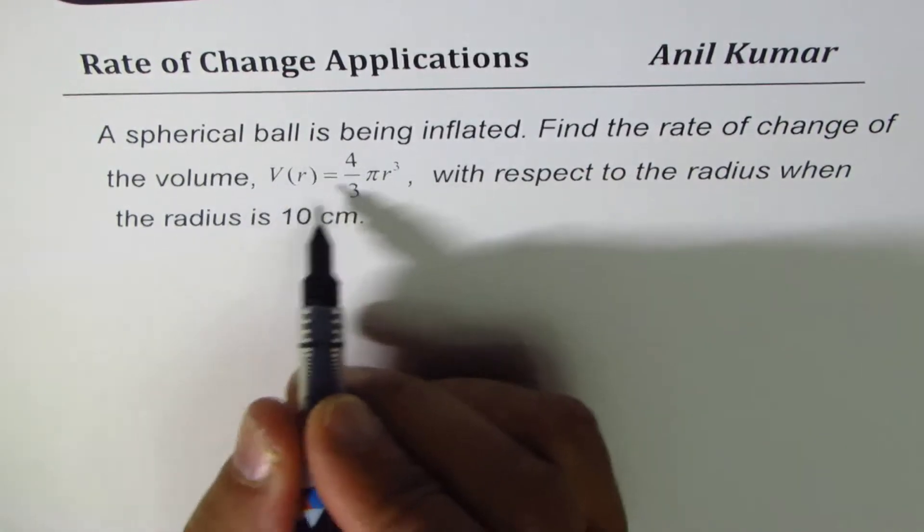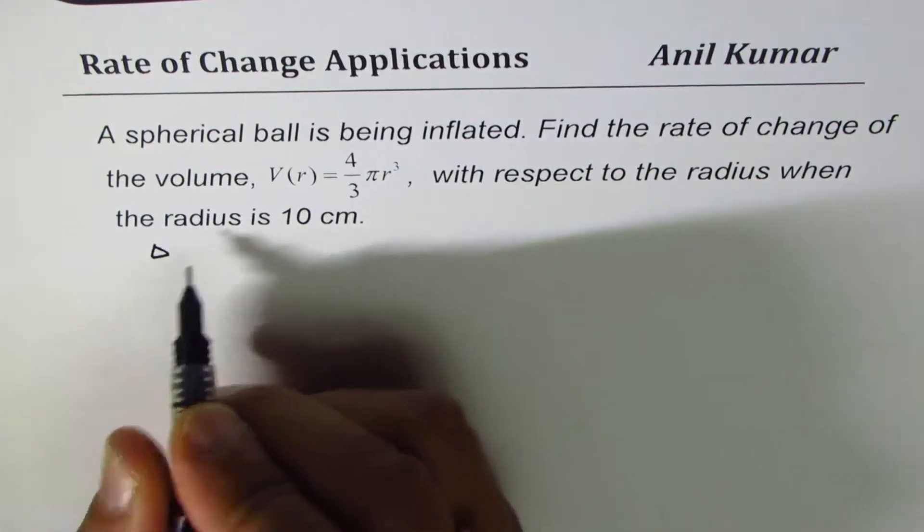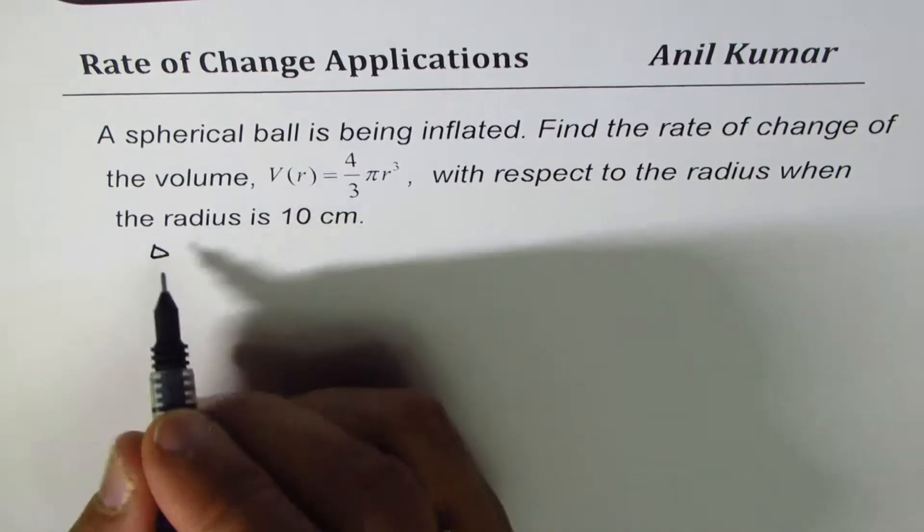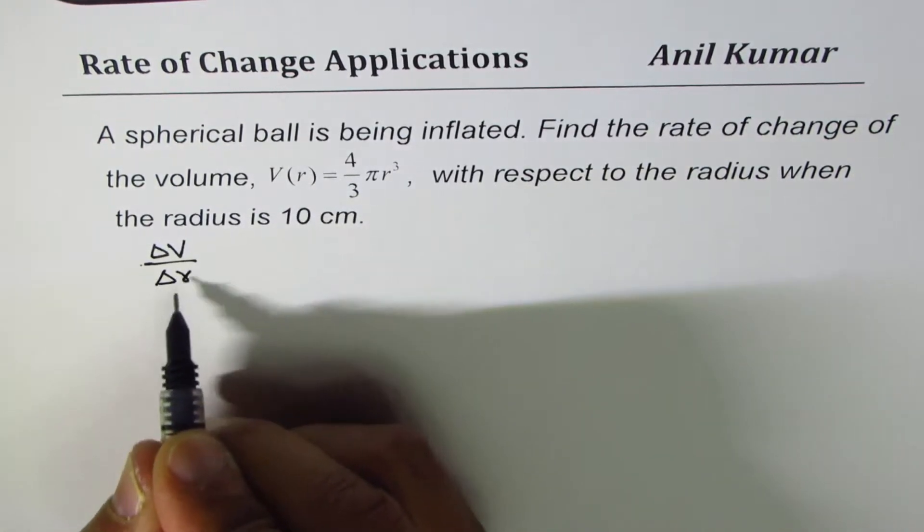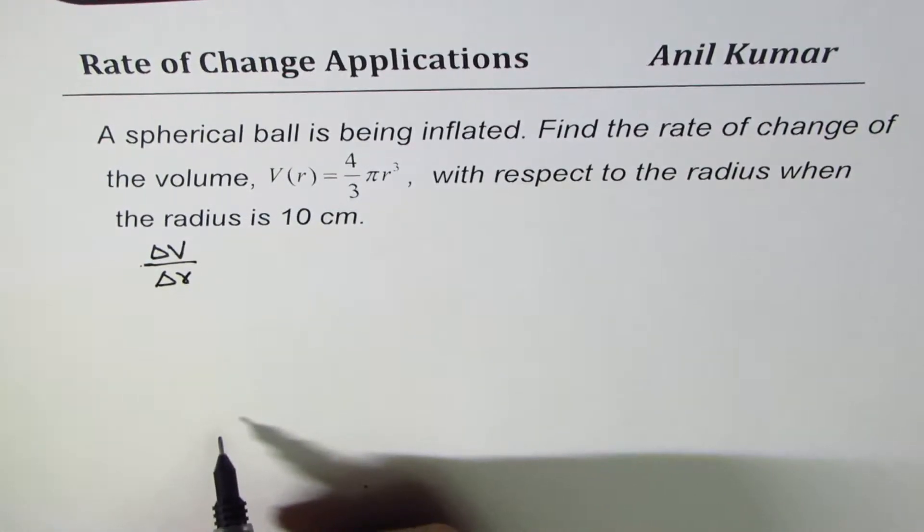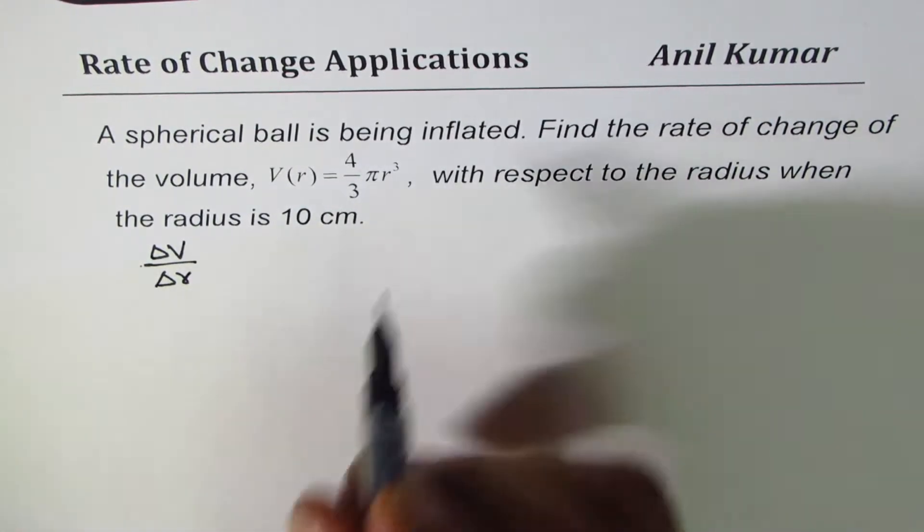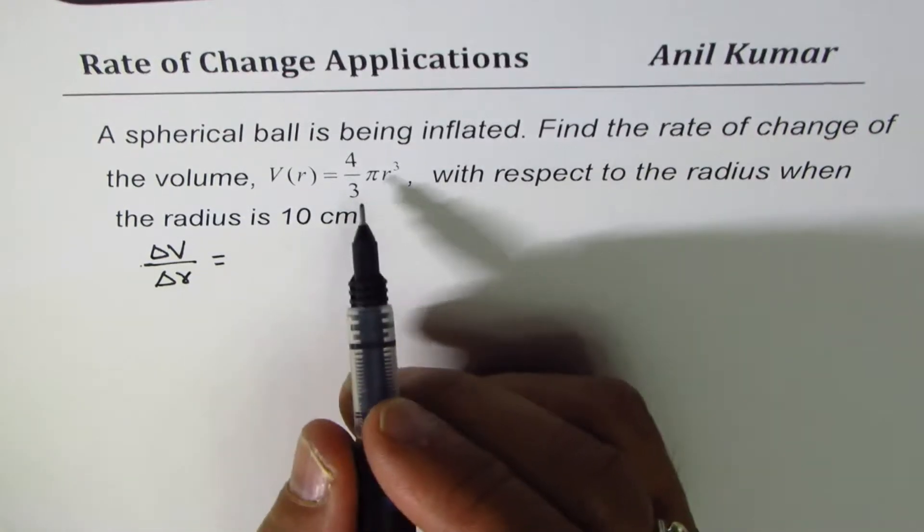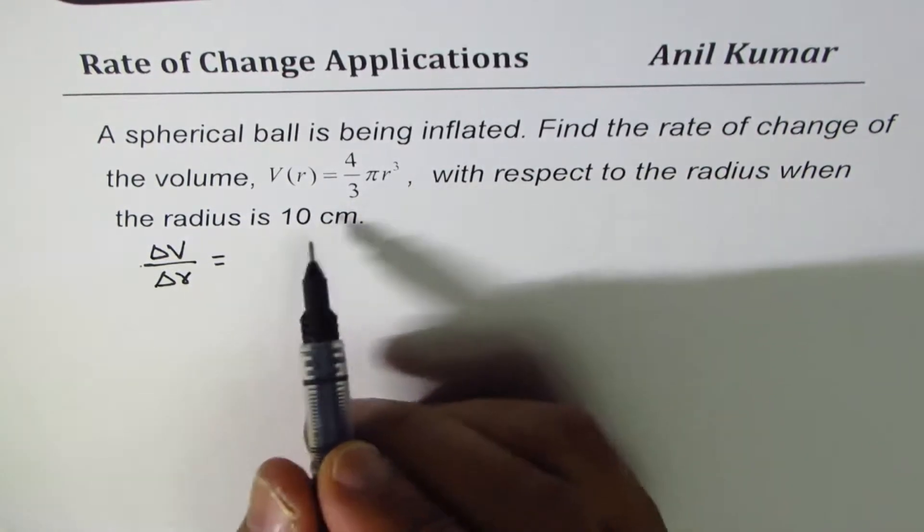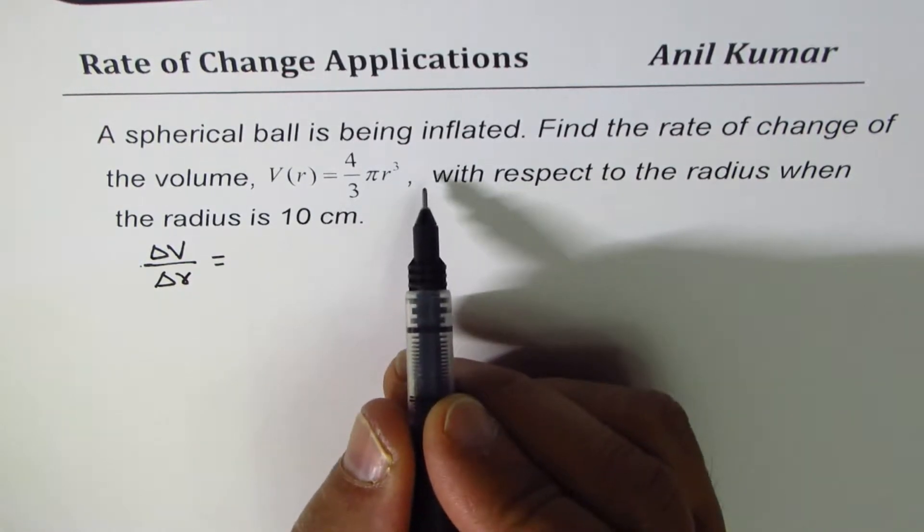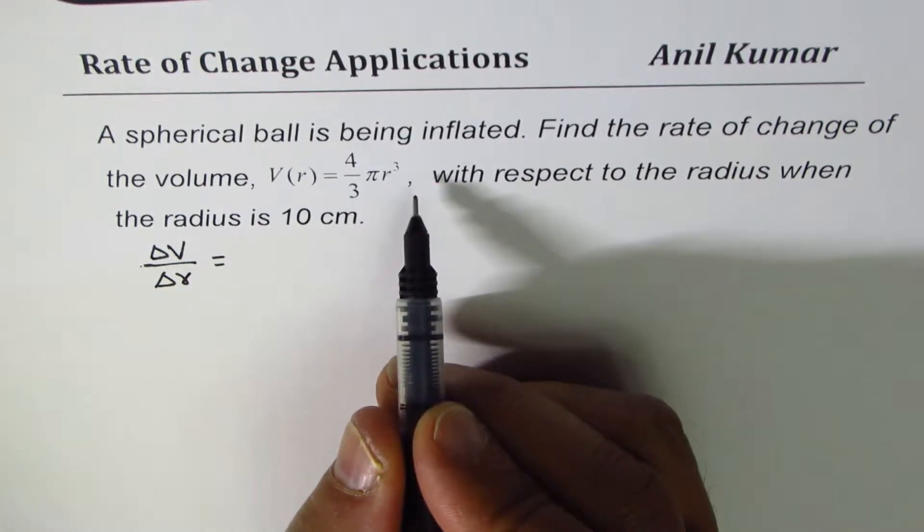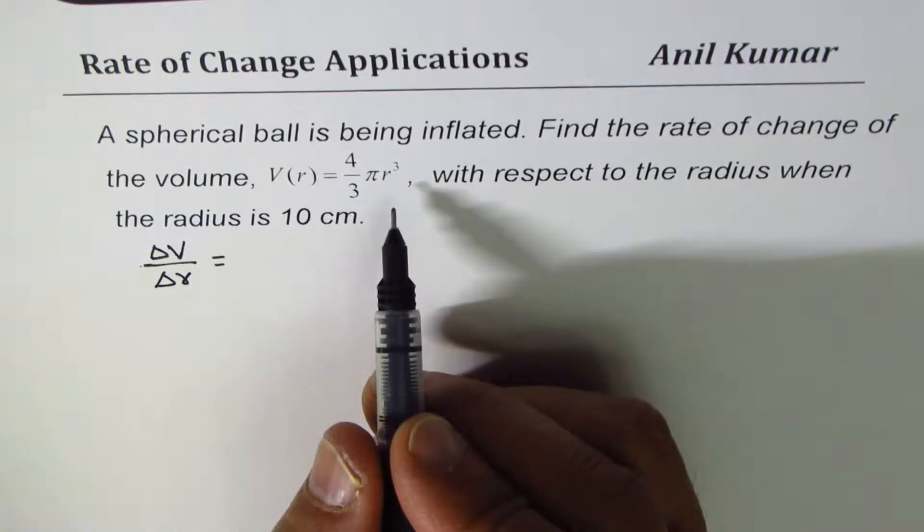So we are looking for a rate of change of volume with respect to radius, that means change in volume over change in radius. That is what we are looking for. Now at any instance of time, let radius be R, and slightly more than R will be represented by let us say ΔR.